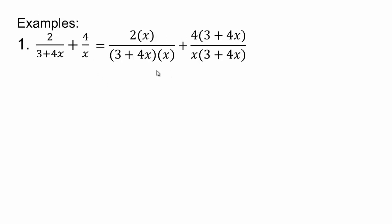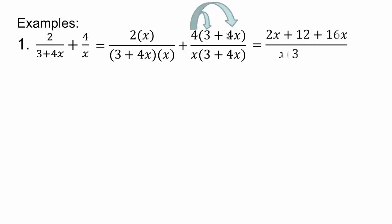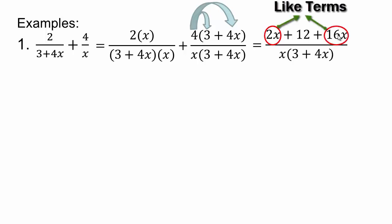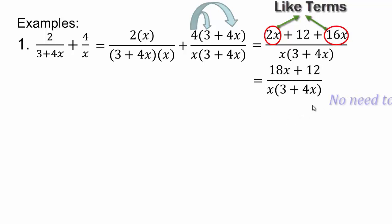Now they both have the same denominator, so all we have to do is use the fact that 2x distributes over addition: 4 times 3 is 12, and 4 times 4x is 16x. Then add like terms, giving us 18x plus 12 divided by the common denominator.